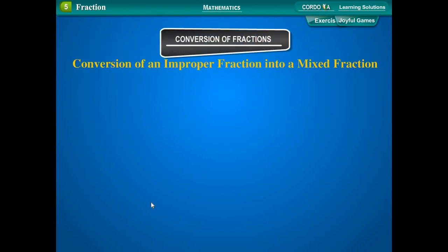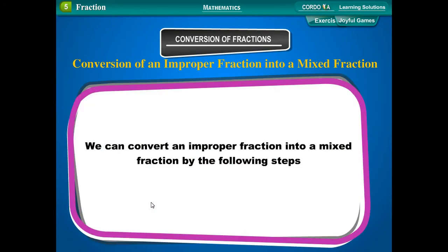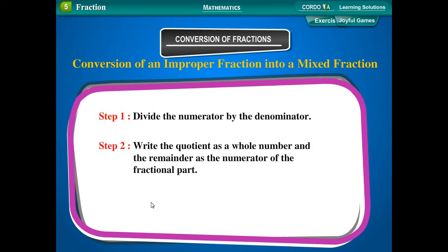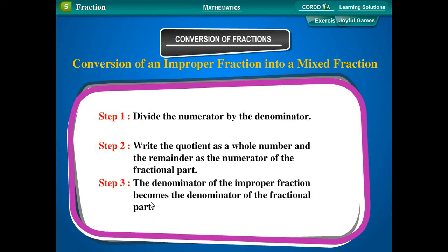Conversion of an improper fraction into a mixed fraction. We can convert an improper fraction into a mixed fraction by the following steps. Step 1: Divide the numerator by the denominator. Step 2: Write the quotient as a whole number and the remainder as the numerator of the fractional part. Step 3: The denominator of the improper fraction becomes the denominator of the fractional part.